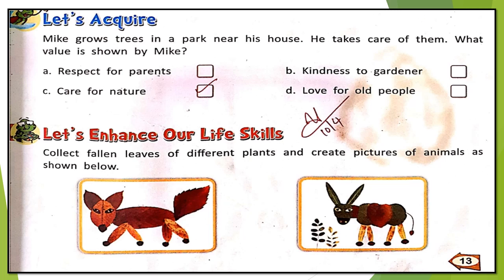Now the values question: Mike grows trees in a park near his house and takes care of them. What value is shown by Mike? Option A: respect for parents, option B: kindness to gardener, option C: care for nature, option D: love for old people. The correct answer is option C — care for nature — because he is taking care of trees.